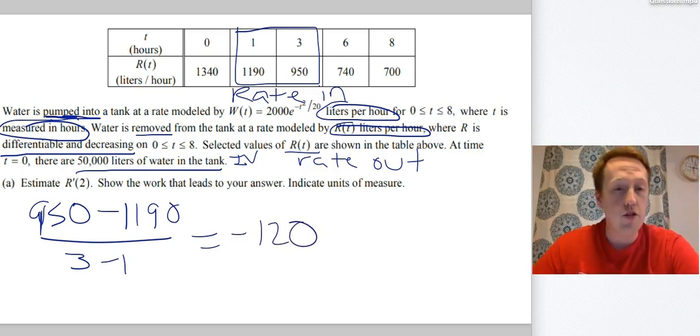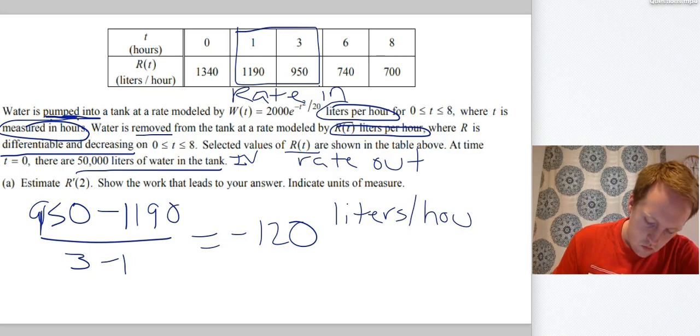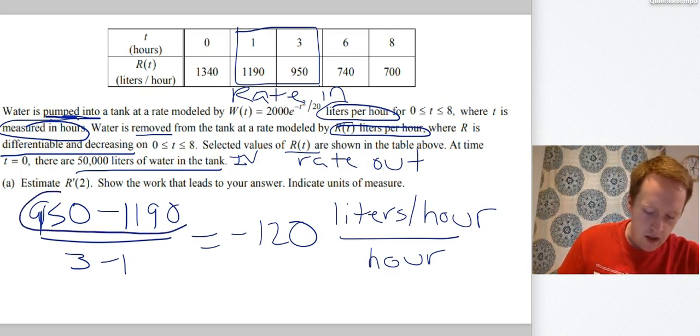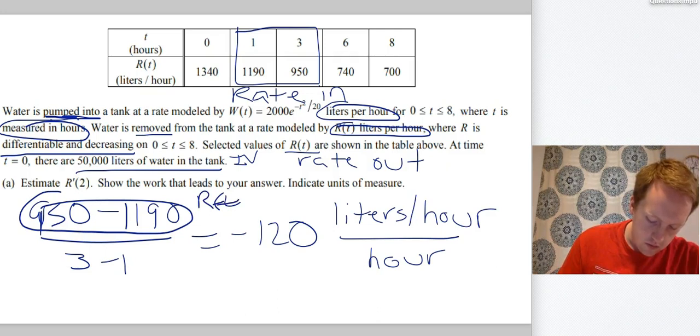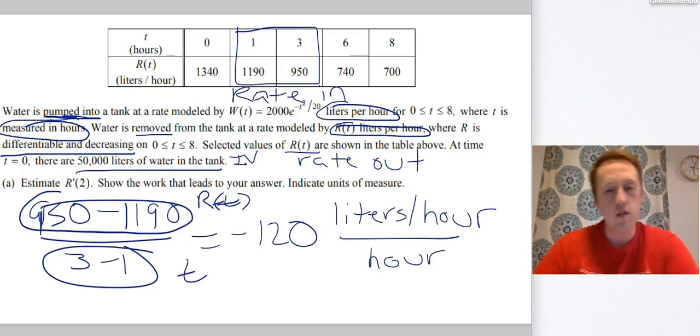Now it says indicate units of measure, so we have to be careful and actually do that. The units of measure, so we did a rate of change, so it should be the units for F. In our case, it's R liters per hour per hour. And I think this is actually a really good place to see that. These top values are R values, R of T values. And these values are T values. So it should be the R units over the T units.